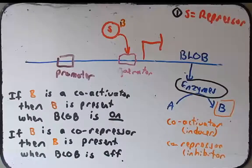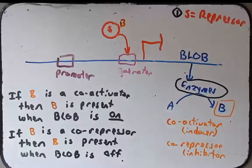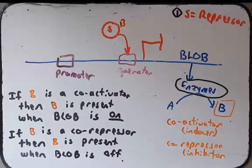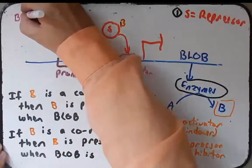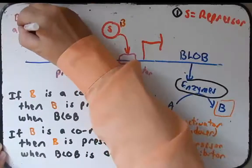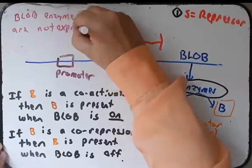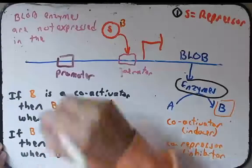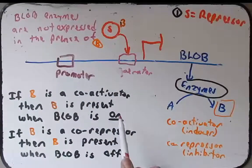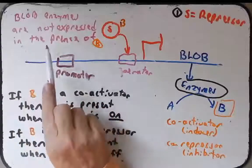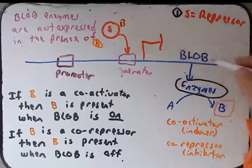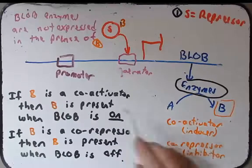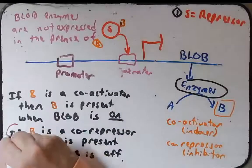The problem says that normally, enzymes are synthesized only in the absence of compound B. I'm going to rephrase that slightly. I'm going to say that normally, the blob enzymes are not expressed in the presence of B. So as long as B is present, according to the problem, the blob operon is off. So according to the problem, when B is present, this operon is off. And that's what we see. If B is a co-repressor, then B is present when blob is off.